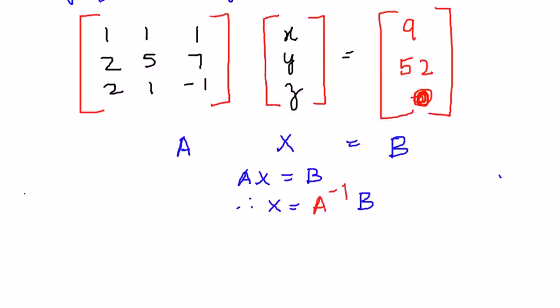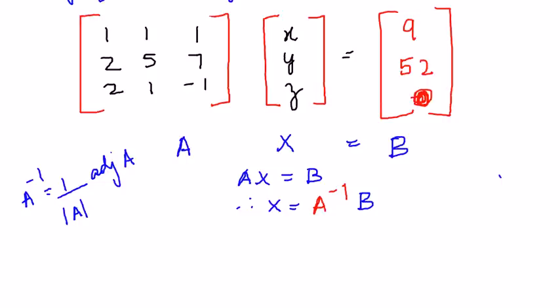To find A inverse for this 3×3 matrix, the formula is A⁻¹ = (1/|A|) × adjoint of A. First we should ensure that |A| ≠ 0 before we can find A inverse.